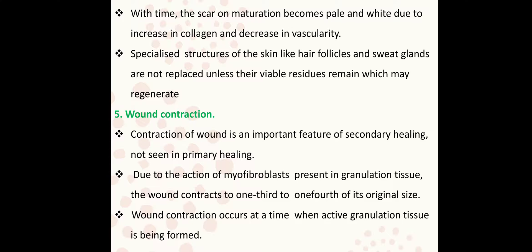Specialized structures of the skin, like hair follicles and glands, are not replaced unless viable residues remain which may regenerate. Next, wound contraction: contraction of the wound is an important feature of secondary healing, not seen in primary healing. Due to the action of myofibroblasts present in the granulation tissue, the wound contracts to one-third to one-fourth of its original size. Wound contraction occurs when active granulation tissue is formed.